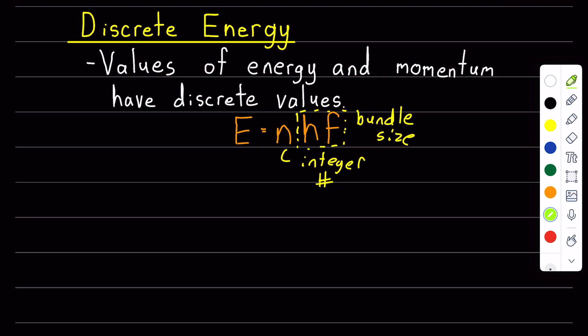For example, in a system where hf is one joule, there's possible values of energy of one joule, two joules, three joules, or so on, whereas a value of like 2.5 joules, which is not an integer times the quanta size of one, is not a possible value of energy.